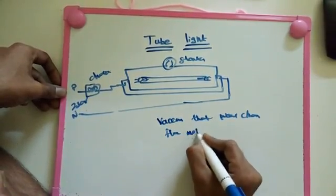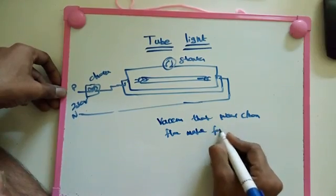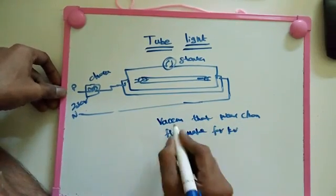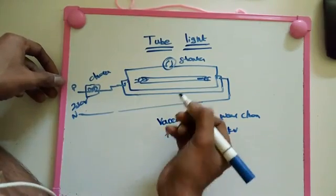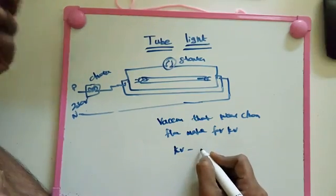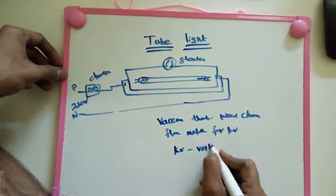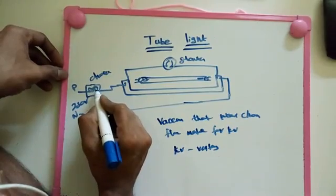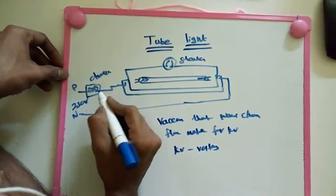For kilovolts, that means we need to start the kilovolt, up to kilovolt voltage. So that's why we make choke here. This choke will produce a kilovolt voltage across the tube lights, then only we start the tube light.